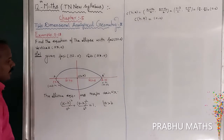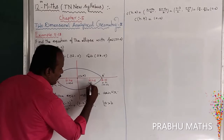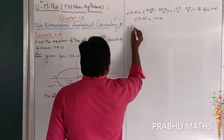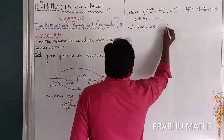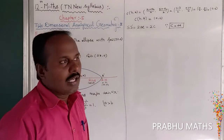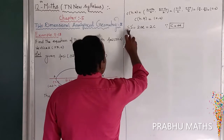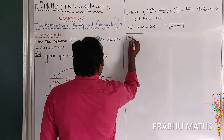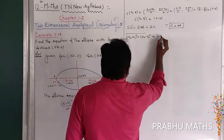Next, find the distance SS'. The distance SS' equals 2ae, which equals 2c, since c = ae. By the distance formula: √[(x2 − x1)² + (y2 − y1)²] = 2c. Substituting foci (2, 0) and (−2, 0): √[(2 − (−2))² + (0 − 0)²] = 2c.